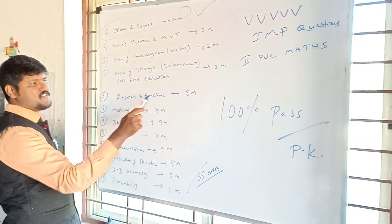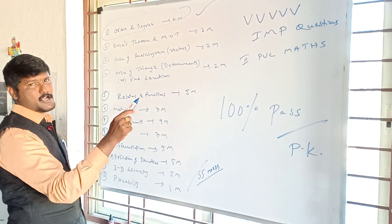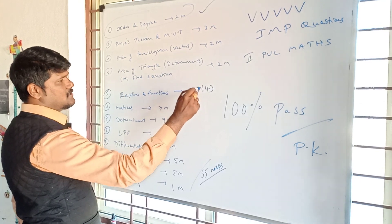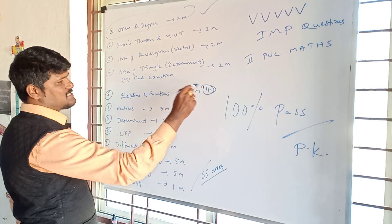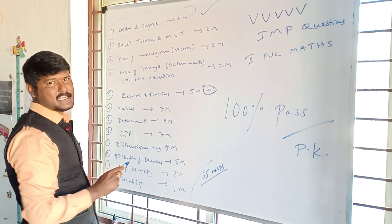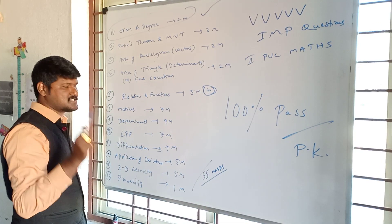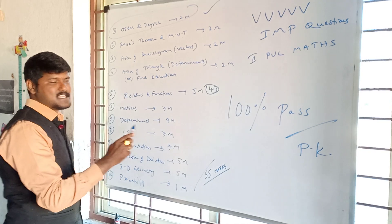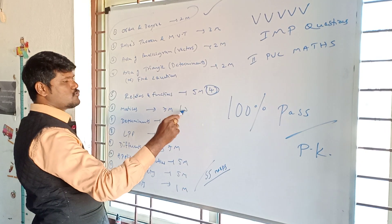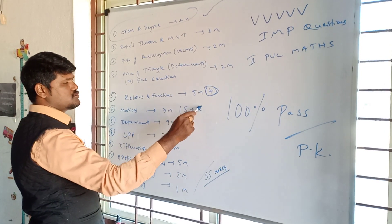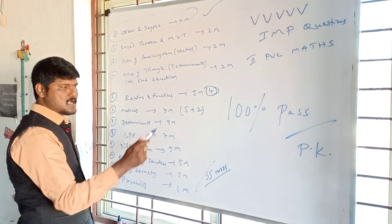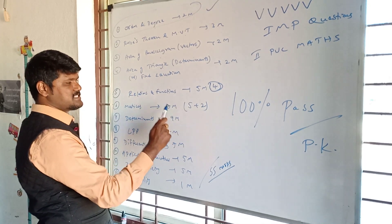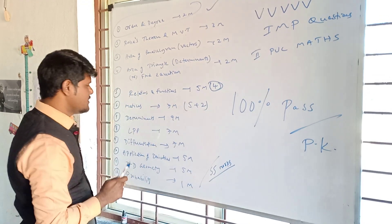Relations and functions: we have a 5-mark question. Out of 4 questions, 1 question is compulsory — 5 marks in relations and functions. Matrices: 1 five-mark question and 1 two-mark question. Compulsory questions in matrices — 1 five-mark and 1 two-mark, that's 7 marks total.